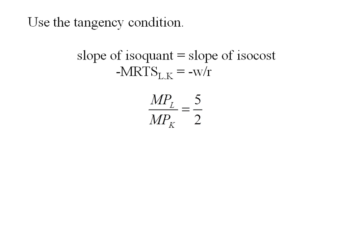We'll start with the tangency condition, where the slope of the isoquant is equal to the slope of the isocost line, which means the negative of the marginal rate of technical substitution will be equal to the negative of the wage rate over the rate of capital. So MRTS is the ratio of the marginal product of labor to the marginal product of capital, and we know that W is 5 and R is 2.